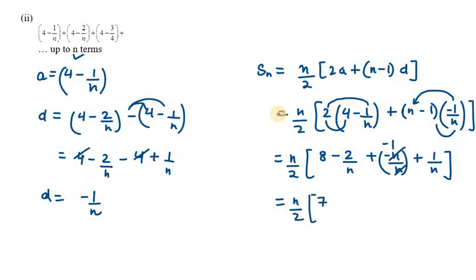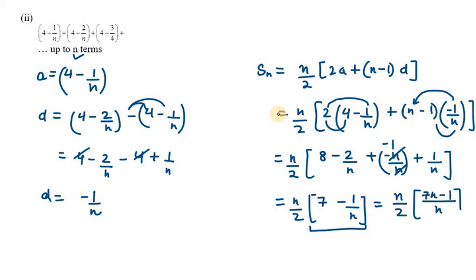So N over 2 in bracket: 8 minus 1 is 7, and minus 2N plus N gives minus N. Taking LCM of the bracket gives N over 2 into [7N minus 1] over N. Cancelling N, we get (7N minus 1) over 2 as Sn. The sum of all terms up to N terms is (7N minus 1) over 2.